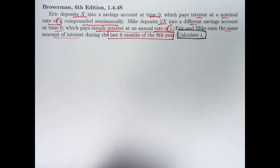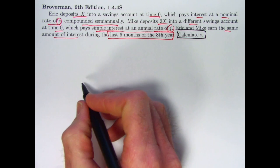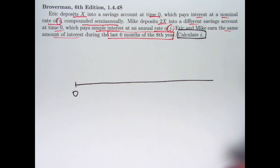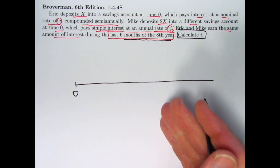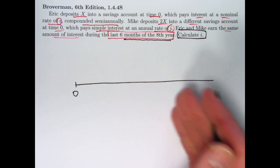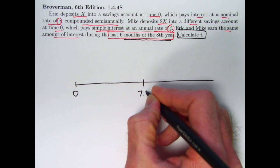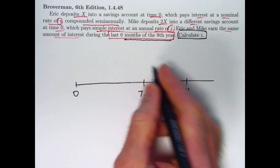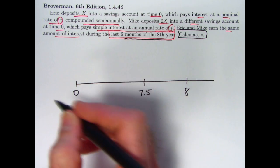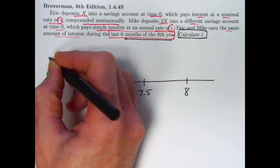So I'm going to solve this problem. It does, I think, at first glance seem like it could be a difficult problem. I'm going to solve it, and I'm also going to generalize it. I would encourage you to consider doing this kind of thing from time to time. Let's draw our number line. Here's time zero. The last six months of the eighth year, what is that? The eighth year goes from time seven to time eight. So the last six months of it will go from time 7.5 to time eight.